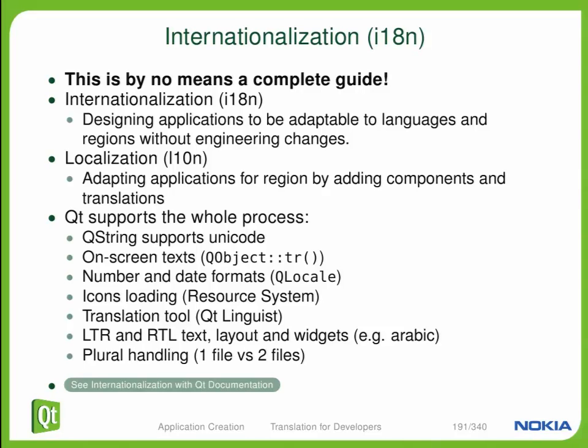Those are the strings that you want to have translated by your translator. Now internally, Qt supports printing of dates and numbers with a locale specific format. So if you're in a European locale, your dates will be formatted as day, month, year. If you're in the United States, you get month, day, year. Qt comes with a tool called Qt Linguist that is going to allow you as the programmer to simply write strings into your application using the TR function.